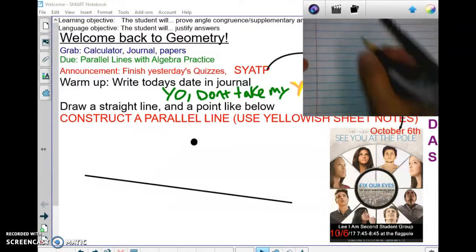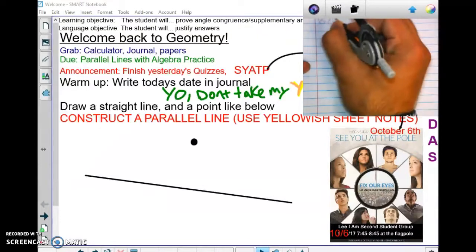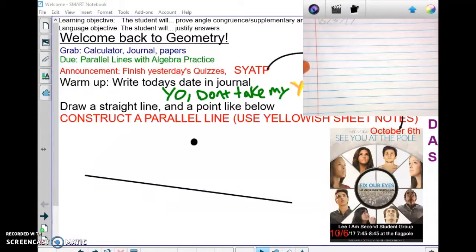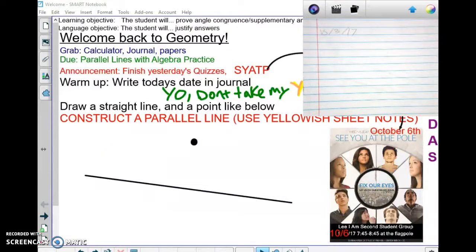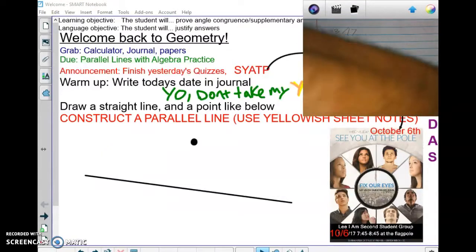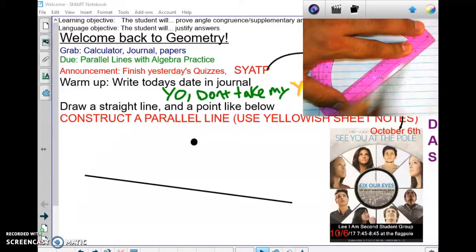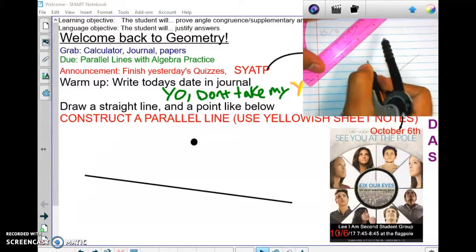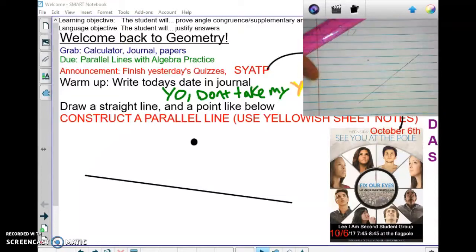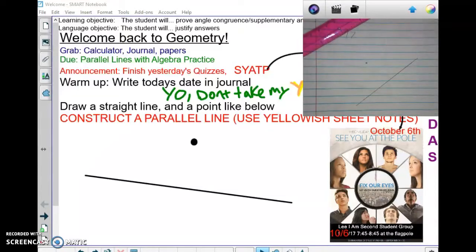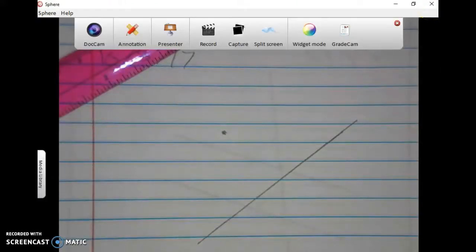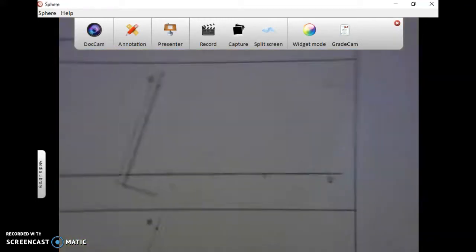Today's date is 10-3-17. Then we want to do what it says. It's pictured on the board, but we want to do it ourselves. Draw yourself any old line and a point kind of far away from it. If you hadn't done that yet, you should have.